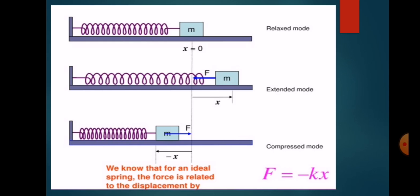See in this diagram. In the first diagram we see the relaxed mode, or the equilibrium position. Consider one end of a spring is fixed to a rigid support, and to the other end a body of mass m is attached, which is free to move over a frictionless horizontal surface. In figure number two, it is the extended mode — the body is displaced toward the right.